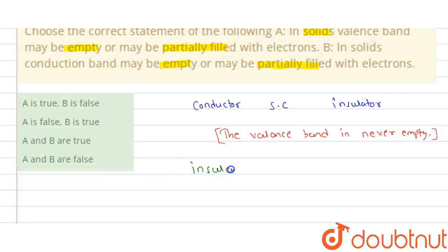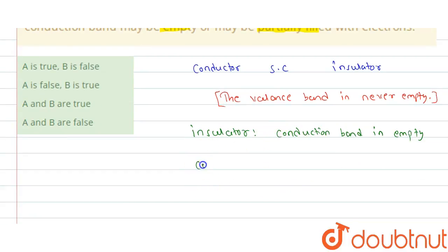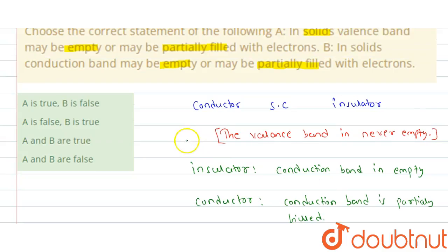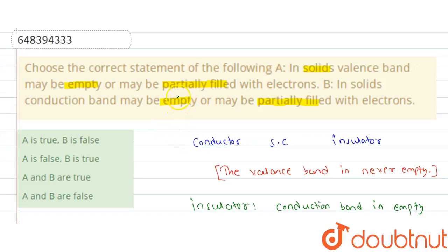Now consider the second statement. In the case of an insulator, the conduction band is empty. But in the case of conductors, the conduction band is partially filled.